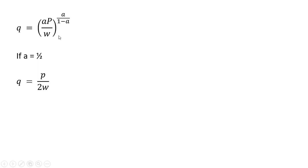Just rewriting that output supply equation. If A was 1 half, our supply equation would simplify down to something nicely like this.